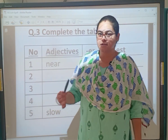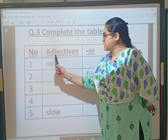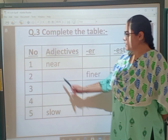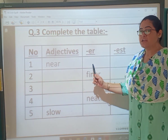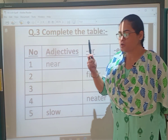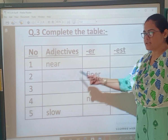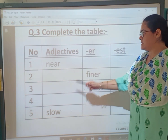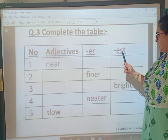Question three: complete the table. The adjectives are given and you have to add -er and -est forms. First one: adjective is 'near' — er form is 'nearer,' est form is 'nearest.' Remember what we did in our textbook. Second row: the adjective is not given, er form is 'finer' — so you have to write the adjective and the est form also. Third: est form 'brightest' is given — you have to write the er form and the simple adjective.